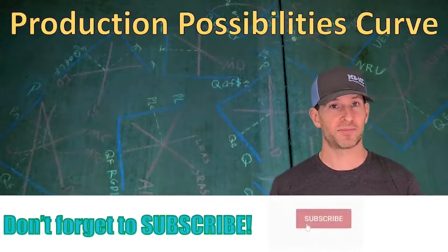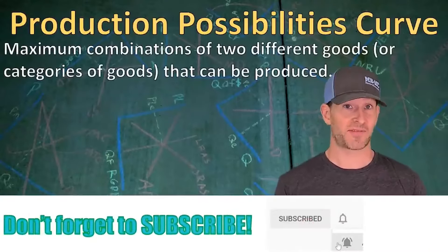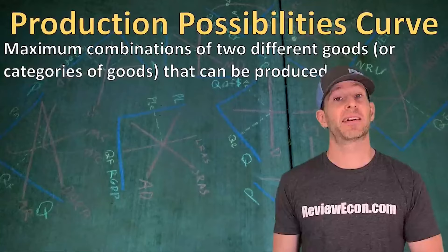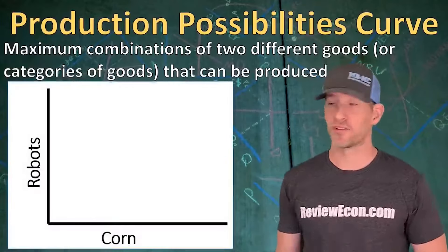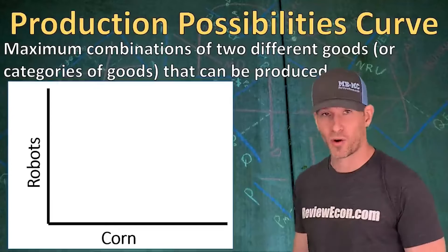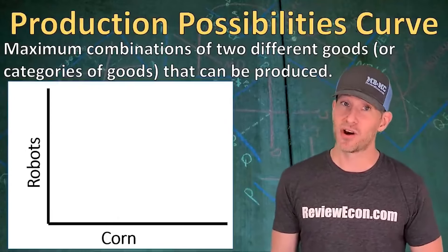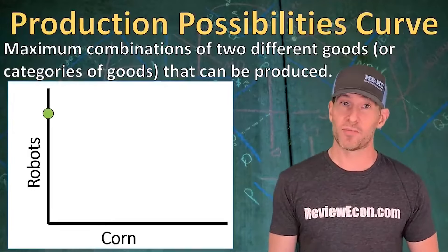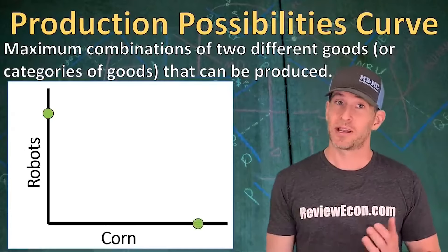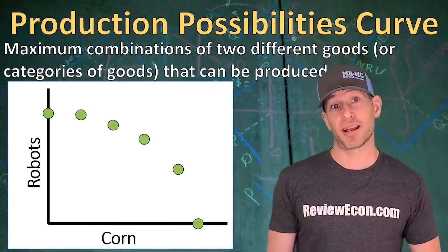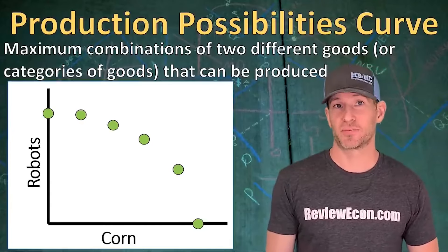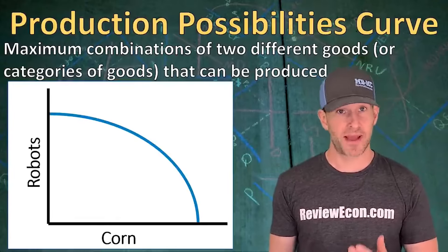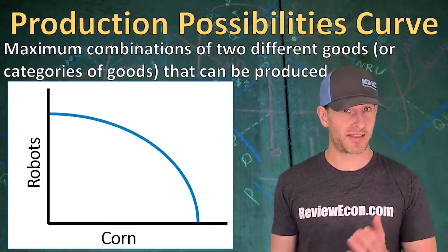The first graph we're going to look at is the production possibilities curve. The production possibilities curve is a graph that shows all possible combinations of production for two different goods or categories of goods that an economy can produce. Here we're going to draw a graph for an economy that can produce both robots and corn. If they produce only robots and no corn, they would have one point; if only corn and no robots, another point. Connecting those dots gives us our production possibilities curve, showing the maximum levels of production between the two goods.